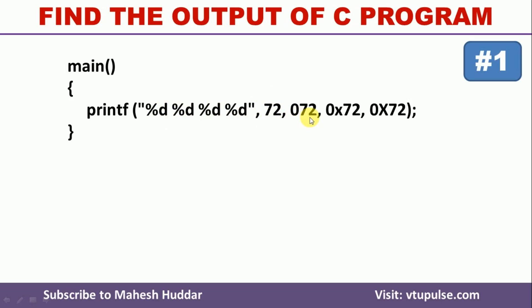In the second case, we are trying to display the integer, but the value present here is the octal number. The octal number will be converted into a decimal equivalent and then it will be displayed. First the decimal equivalent of octal 072 is calculated and then it will be displayed.